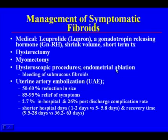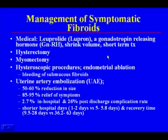Management of symptomatic fibroids includes medical treatment, hysterectomy, myomectomy, hysteroscopic procedures such as endometrial ablation — especially for submucosal fibroids causing bleeding. More recently, uterine artery embolization has been shown to be very helpful in symptomatic fibroids, causing 50 to 60% size reduction and relieving symptoms in 85 to 95% of patients, with shorter hospital stays and rapid recovery.